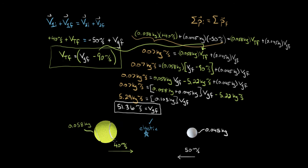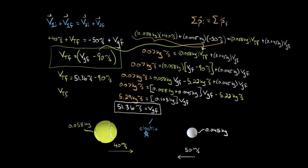But what about the final velocity of the tennis ball? Now that we know VG final, I can just plug that value back into the earlier expression. The final velocity of the tennis ball equals VG final minus 90, which is 51.36 minus 90, giving negative 38.64 meters per second. It came out negative — that means the tennis ball got deflected backwards, heading leftward at 38.64 meters per second after the collision.